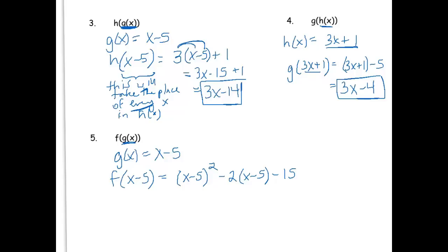Now we just need to clean this up. How do we do x minus five all squared? Some of you like to use the box, some of you like to use foil—either one works for me. In the end, we all get the same answer, which is x squared minus ten x plus twenty five. Next part, let's distribute our negative two, so we'll get negative two x plus ten, and we still have the minus fifteen.